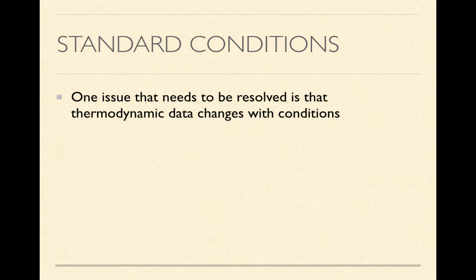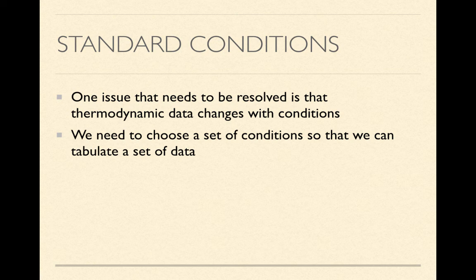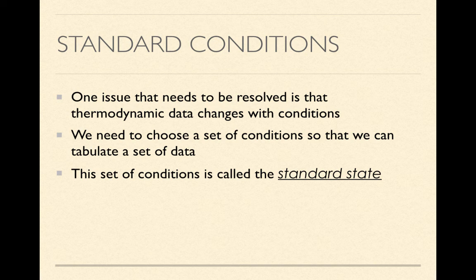Thermodynamic data changes as conditions change, so we need to define a standard. This is similar to measuring elevation above sea level. For thermodynamic data, we define a standard state. The conditions for standard state are: gases at 1 atmosphere, solutions at 1 molar concentration, temperature generally at 25°C, and elements or compounds in their most stable form and phase at that temperature. For example, water's most stable form at 25°C is liquid, and carbon's most stable form is graphite.